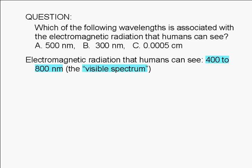Of the choices given, only A is obviously between 400 and 800 nanometers. In fact, 500 nanometers corresponds to light that our eyes perceive as green.